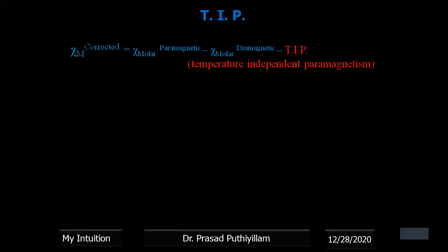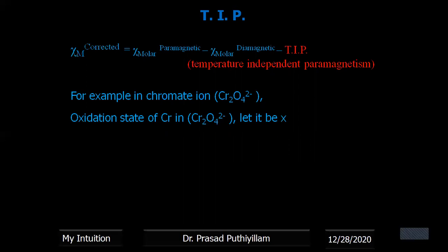Next one, that is temperature independent paramagnetism. So by the word itself, it is independent of temperature. There is no effect of temperature on its magnetic behavior, but certain other values. Like in the presence of the magnetic field, there is no temperature effect, but in presence of magnetic field, for example, if you take chromate ions, CrO₄²⁻, if you calculate the oxidation state of chromium here.